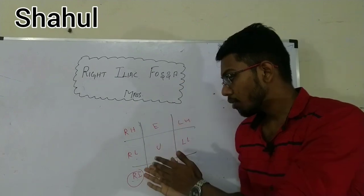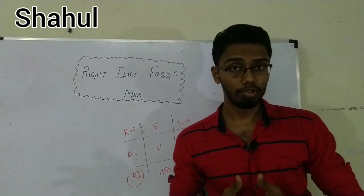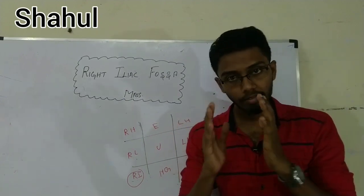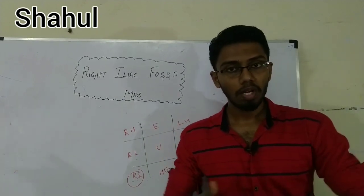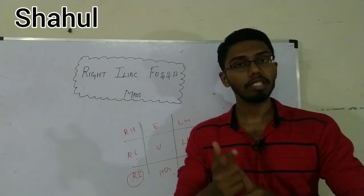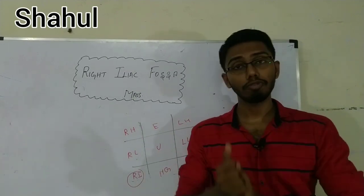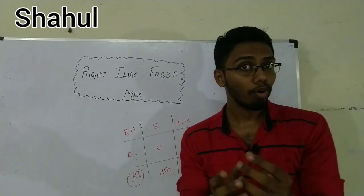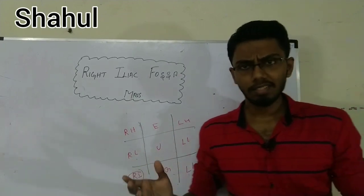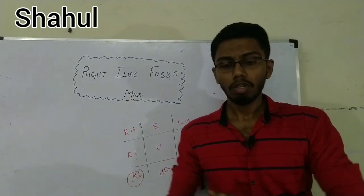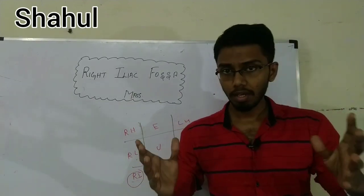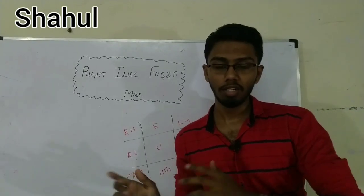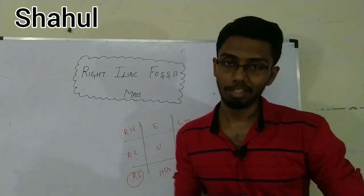We need to know what structures are present in the right iliac fossa. Number one, the important structure is the cecum. Number two, arteries related to the cecum. Number three, veins related to the cecum. Number four, lymph nodes in and around the cecum. Number five, the appendix. Number six, the right ovary. A right iliac fossa mass can be a pathology of any one of these structures, so we need to think in all aspects.